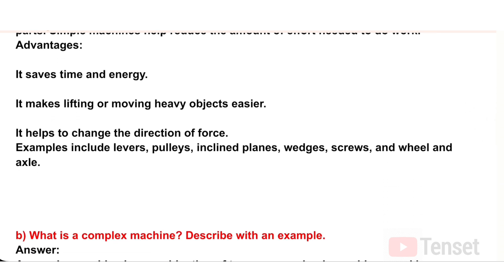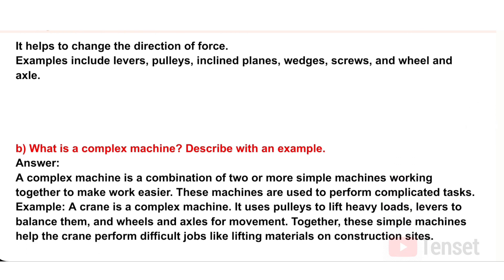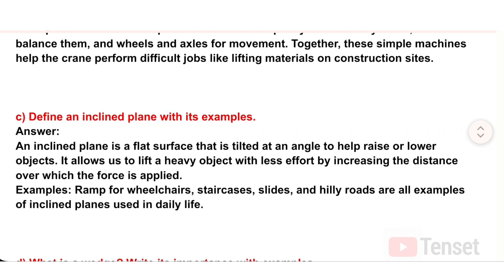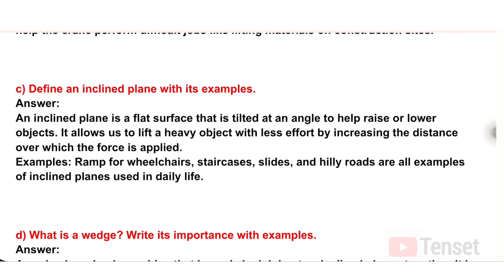B) What is a complex machine? Describe with an example. Answer: A complex machine is a combination of two or more simple machines working together to make work easier. These machines are used to perform complicated tasks. Example: A crane is a complex machine — it uses pulleys to lift heavy loads, levers to balance them, and wheels and axles for movement, helping perform difficult jobs like lifting materials on construction sites.